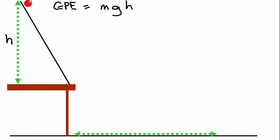So the ball begins with gravitational potential energy. As the ball rolls down the ramp to the bottom, it gets faster and faster and faster. Its gravitational potential energy is being converted into movement energy, into kinetic energy.